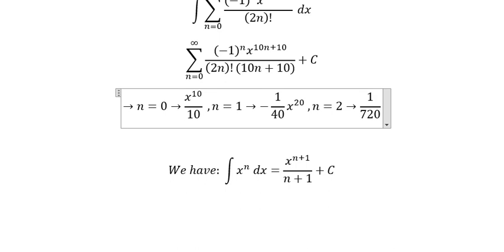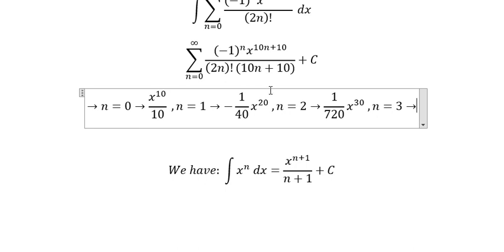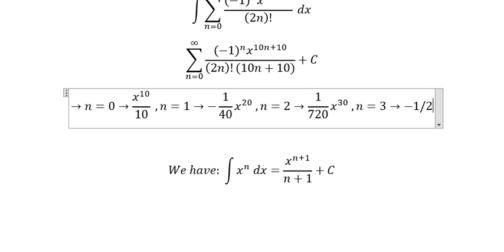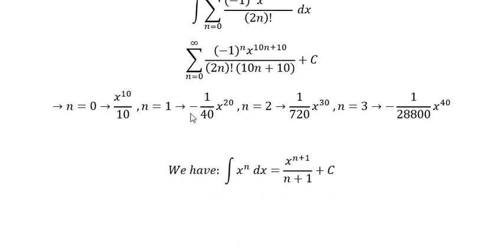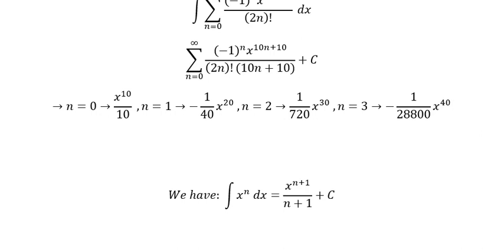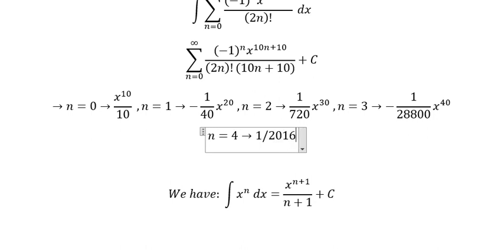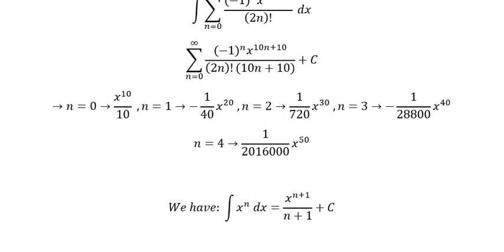When n equals to three we have negative one over 28,800, s to the power of 40. And the last one, n equals to four — we put number four here and we have one over 2,016,000, s to the power of 50. This is the end, thank you for watching.